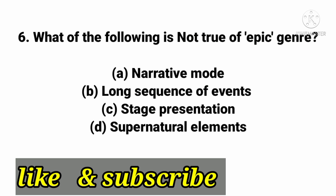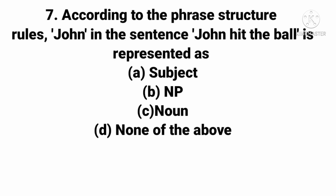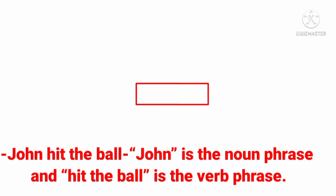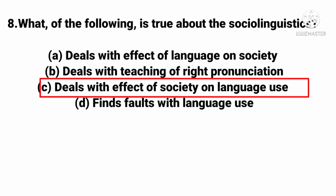The next question: Which of the following is not true of the epic genre — narrative mode, long sequence of events, stage presentation, or supernatural elements? The right answer is stage presentation — that is not a feature of the epic genre. Next: According to phrase structure rules, in the sentence 'John hit the ball,' 'John' is a noun phrase and 'hit the ball' is a verb phrase.